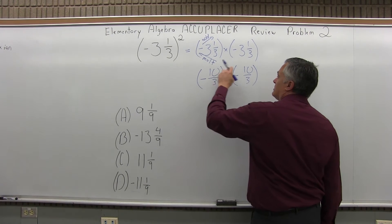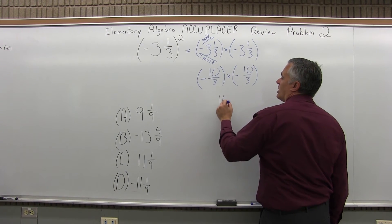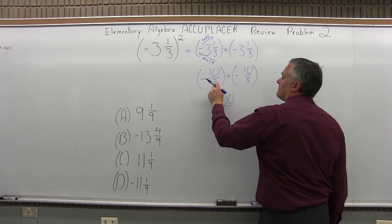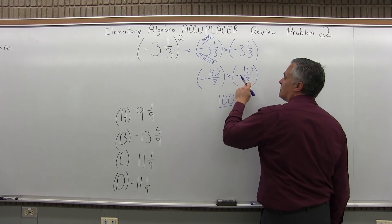So, top times top, 10 times 10 is 100. Bottom times bottom, 3 times 3 is 9.